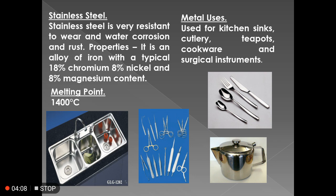Next is stainless steel. Stainless steel is very resistant to wear, water corrosion, and rust. It is an alloy of iron with typically 18% chromium, 8% nickel, and 8% manganese. Because of the presence of nickel, it is able to resist corrosion. Its melting point is 1400 degrees Celsius. Its applications include kitchen sinks, teapots, cookware, and surgical instruments.